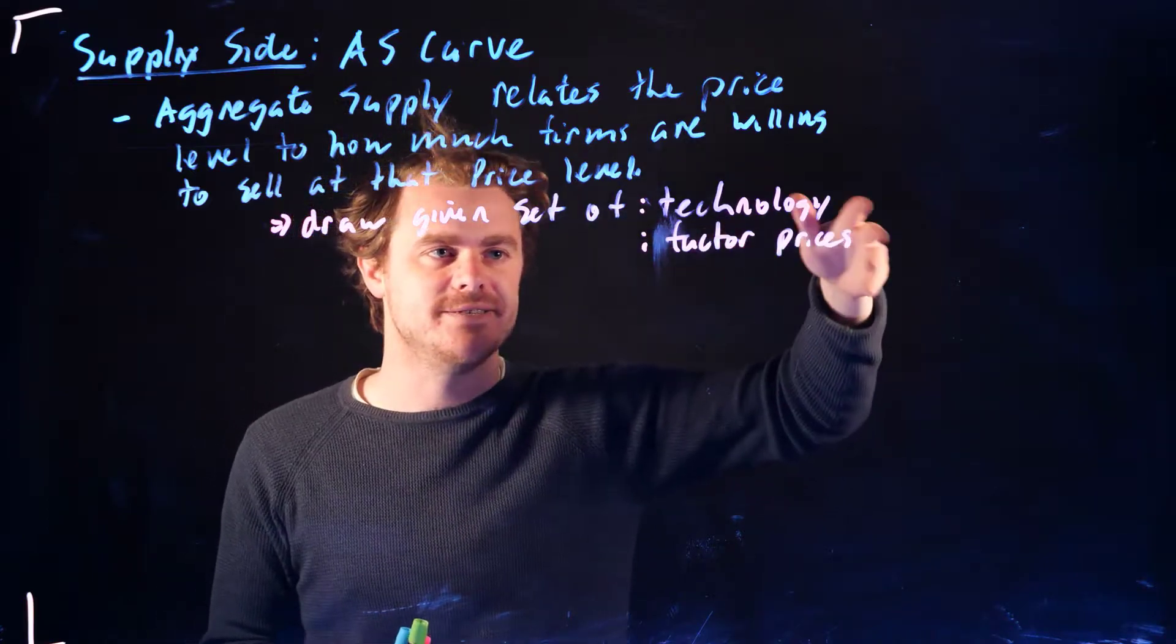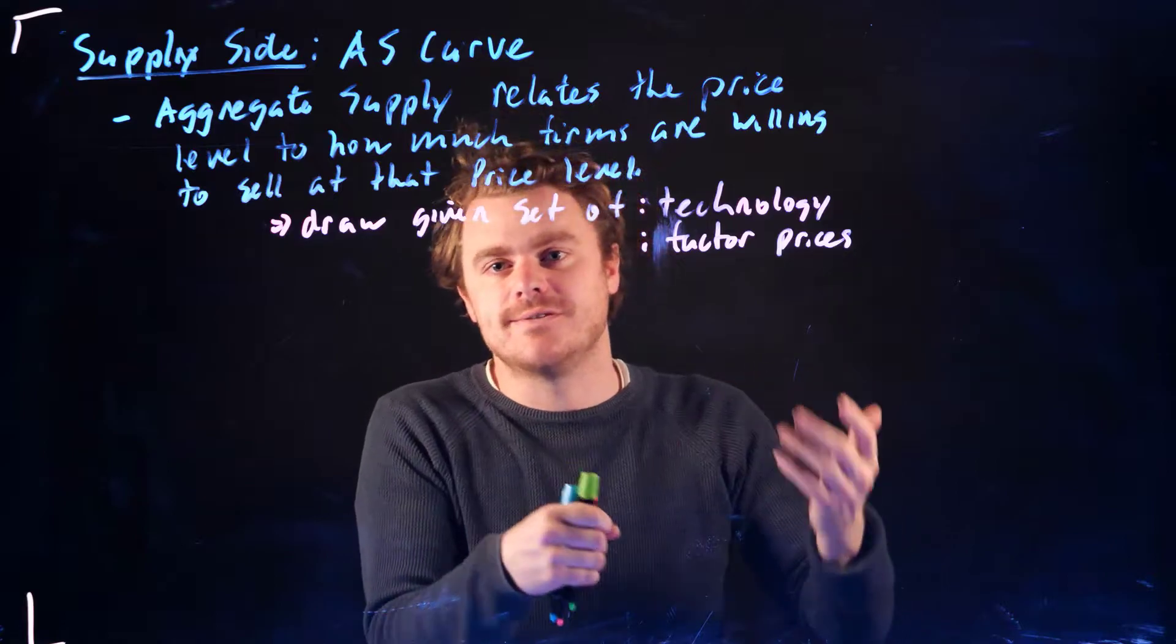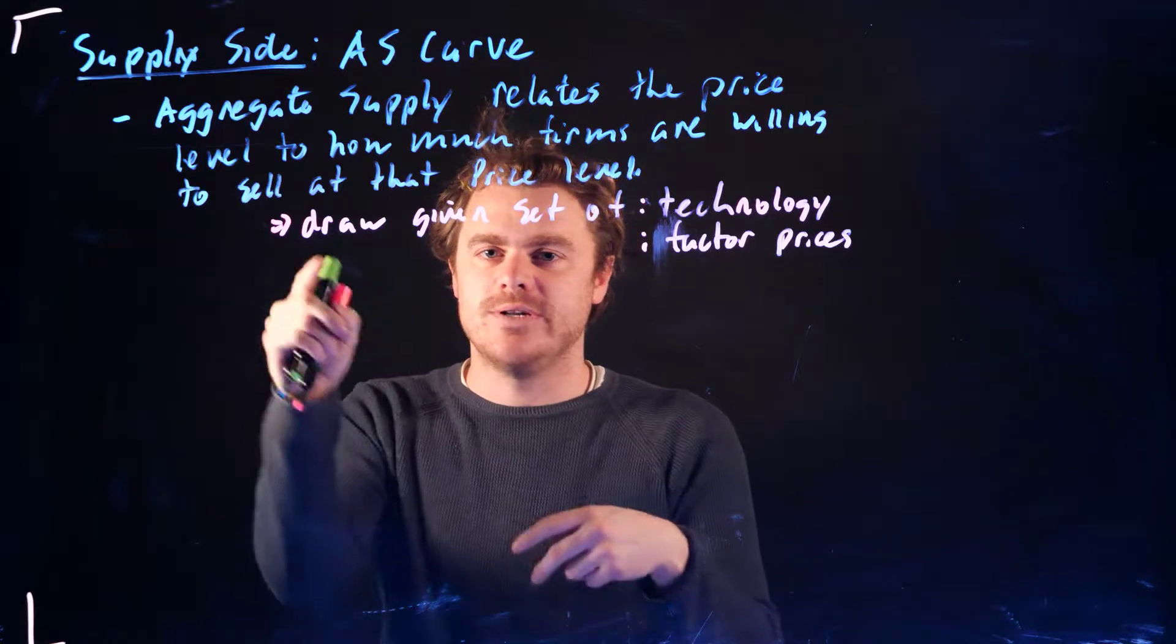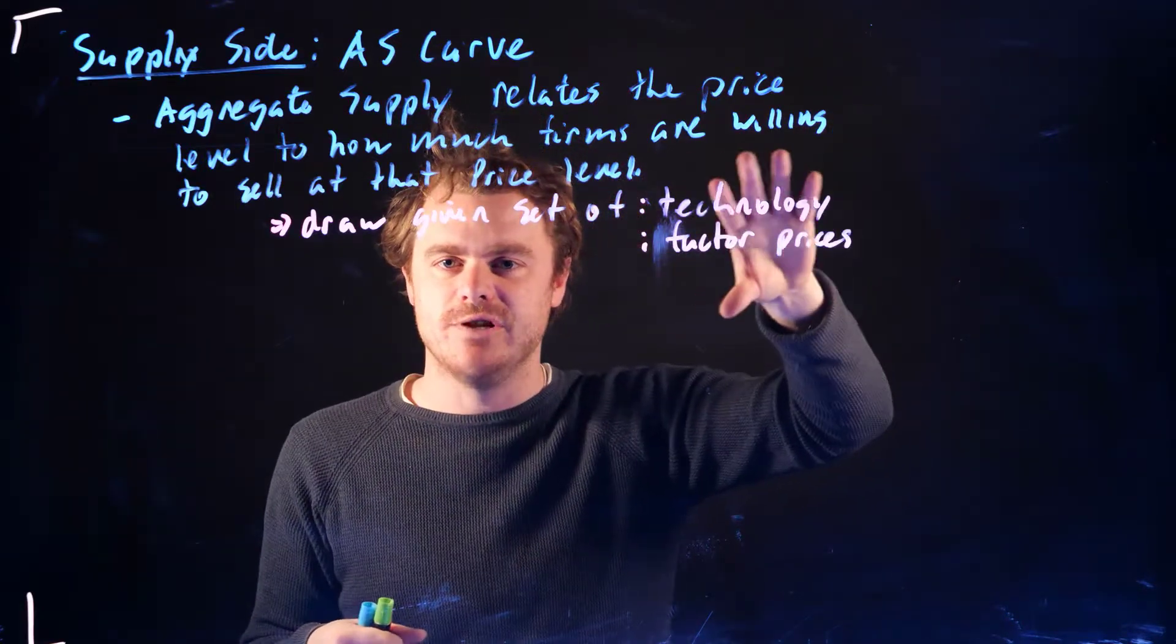Think about it. A big driver of this model, what we're going to see is going to be wages. And so changes in wages or also changes in the price of oil or other inputs are going to cause this curve to shift. And so when we draw it originally, we're kind of drawing it assuming some level of those things.